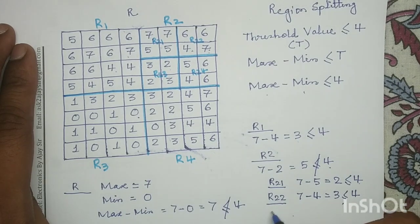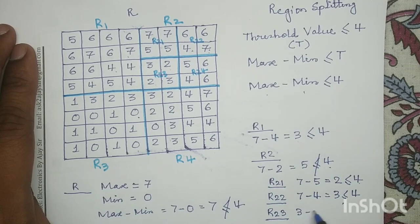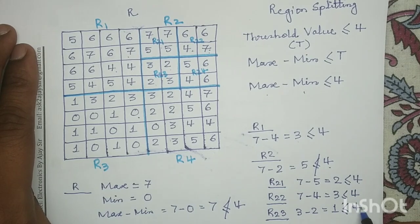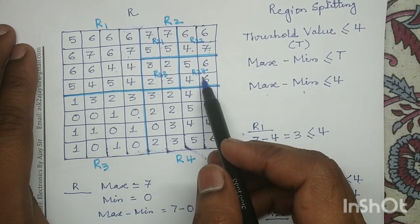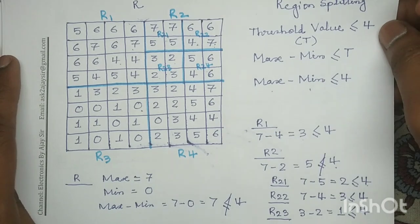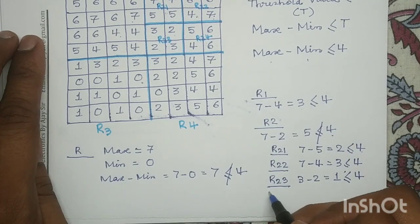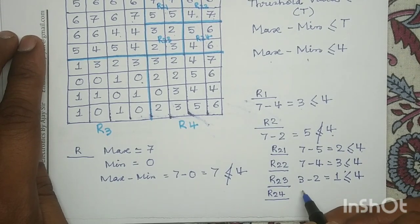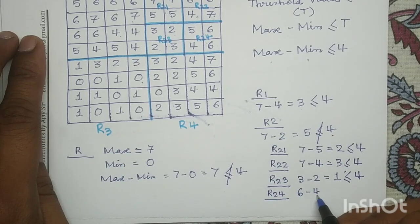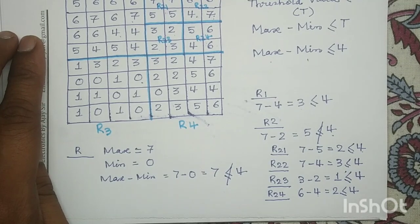For R23: maximum value is 3, minimum value is 2. 3 minus 2 equals 1, which satisfies the homogeneity condition (1 ≤ 4). So we will not split R23. For R24: maximum value is 6, minimum value is 4. 6 minus 4 equals 2, which is less than or equal to 4. It satisfies the homogeneity condition, so we will not split R24.